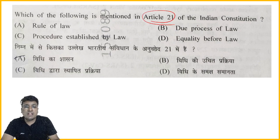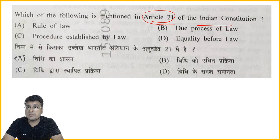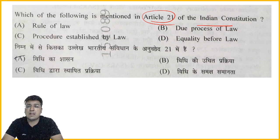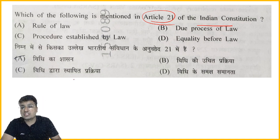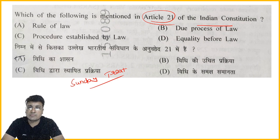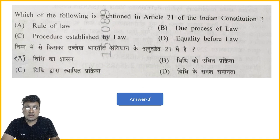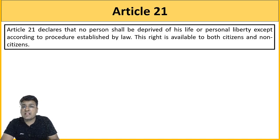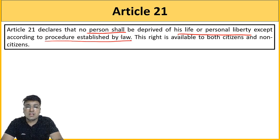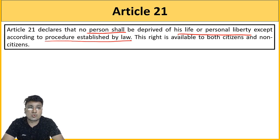Next question: which of the following is mentioned in Article 21 of the Indian Constitution? The options are: Rule of Law, Due Process of Law, Equality before Law, and Procedure Established by Law. The correct answer is 'Procedure Established by Law.' Article 21 states: no person shall be deprived of his life or personal liberty except according to the procedure established by law. This right is available to both citizens and non-citizens.